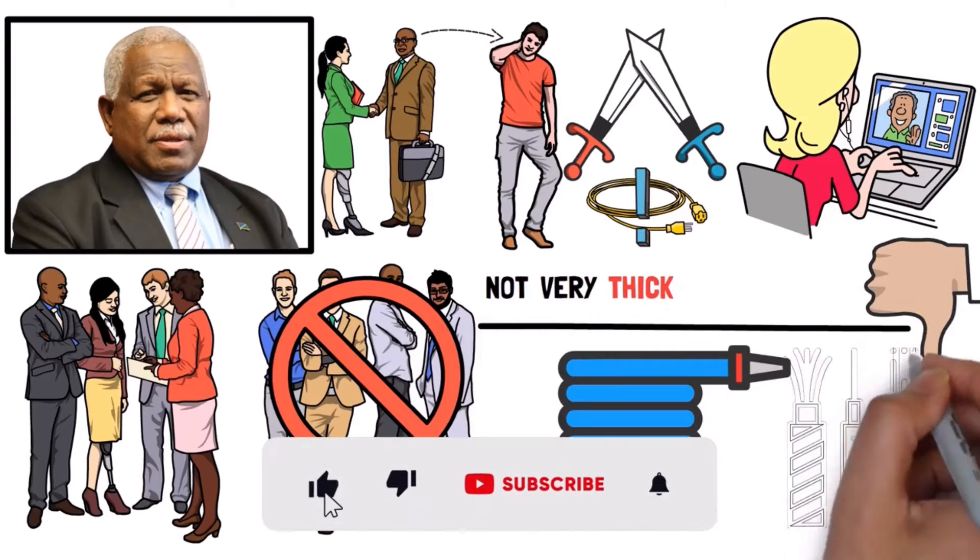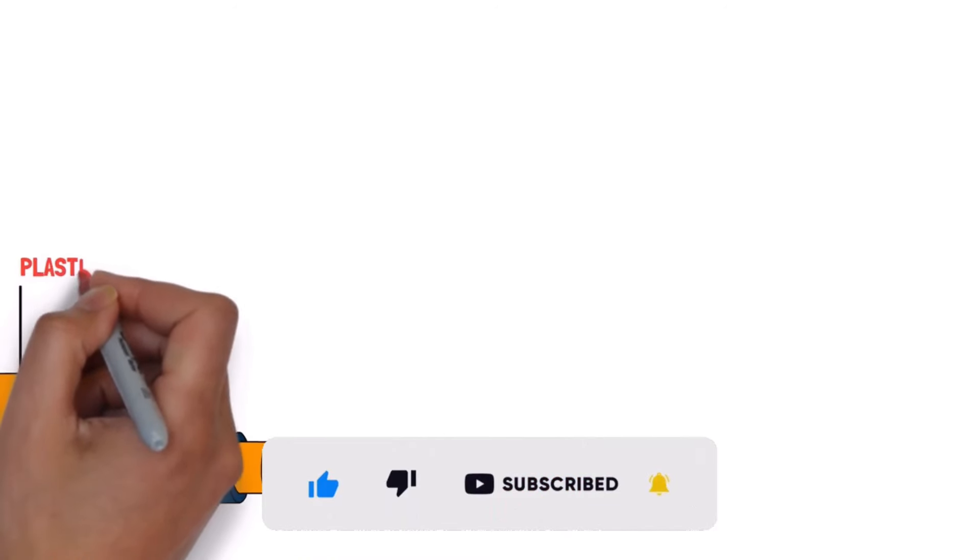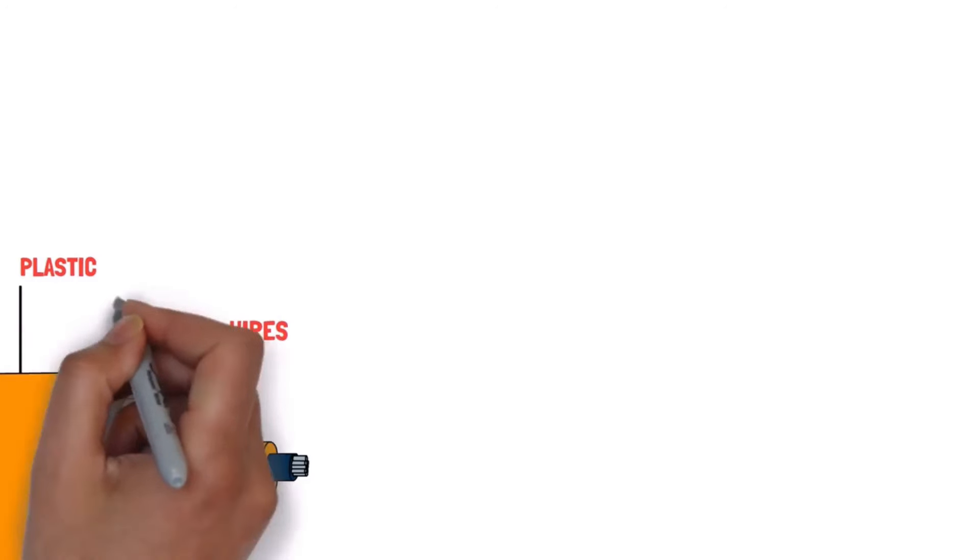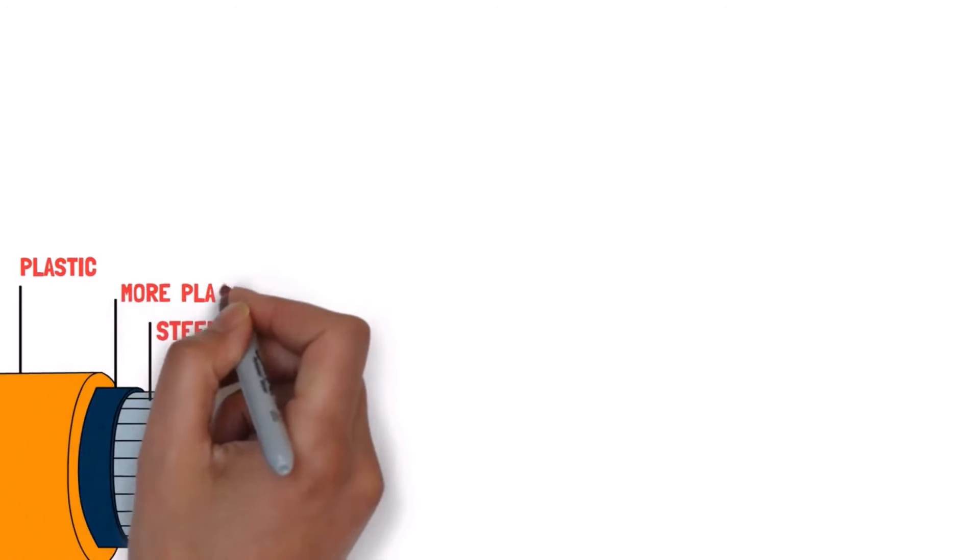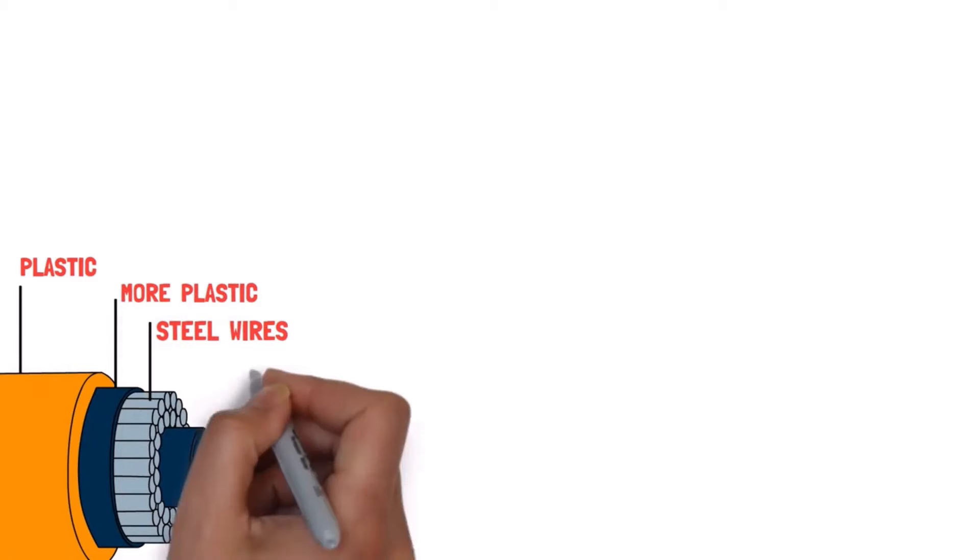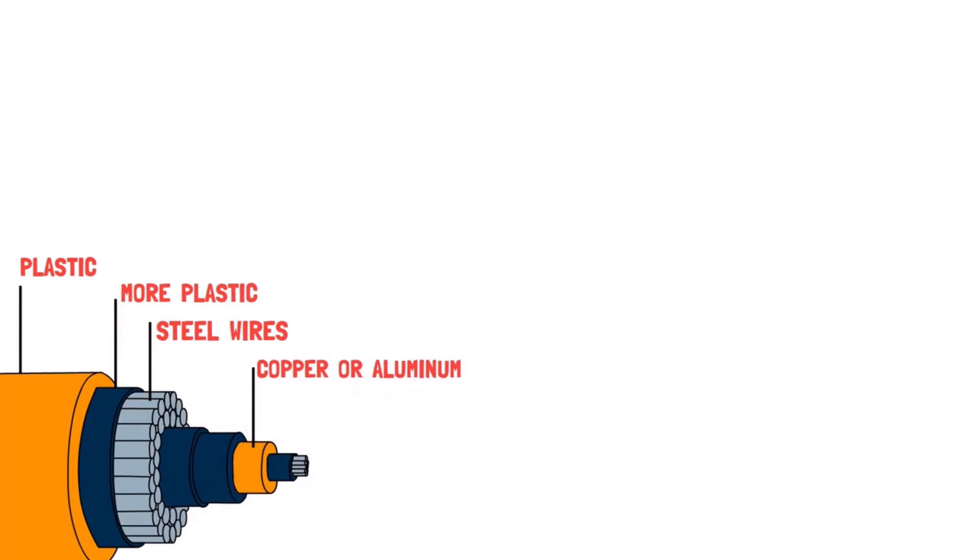They have different layers and parts. On the outside, there's a layer of plastic to keep everything safe. Under that, there are strong steel wires for protection. Then there's more plastic to keep water out, followed by more steel wires and plastic. In the middle, there's a tube made of copper or aluminum to protect the cable. Around all of this, there's a special tape to stop water from getting in. Finally, right at the centre, there are tiny, hair-like fibres that carry information with laser signals.